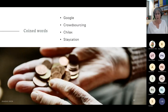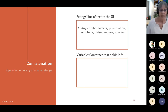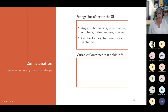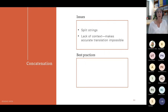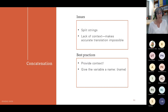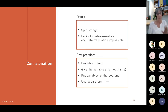Here are some examples of coined terms — some very familiar, others perhaps not. Now we come to concatenation. A string is a line of text in the user interface — any combination of letters and punctuation — and could be anything from one character to a sentence. A variable holds replaceable content and can be found anywhere in a string. The issue: it can lead to split strings, and the lack of context makes translation difficult. What do we do? We provide context, give the variable a name, put variables at the beginning or end of a sentence, and use a technique like a comma, colon, or m-dash to separate between them.